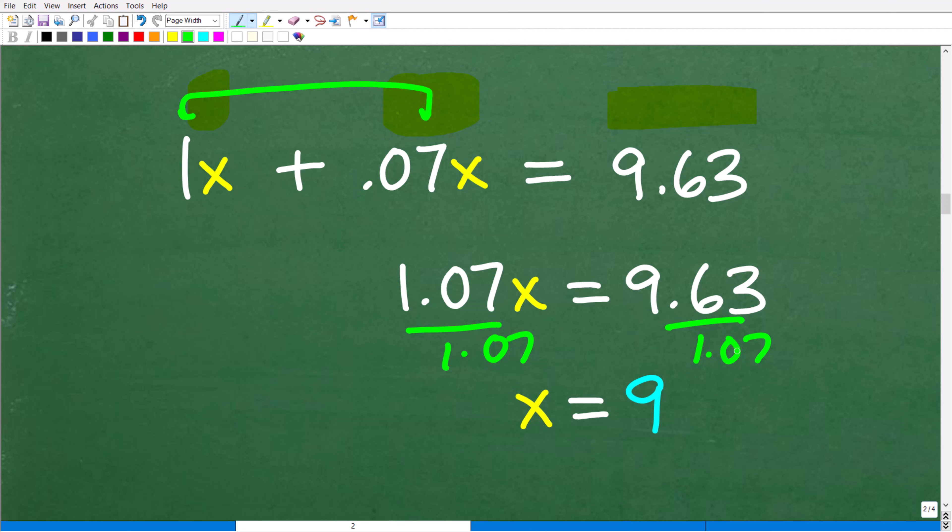So 9.63 divided by 1.07 is 9. So that means our lovely product here, whatever it is, is $9.